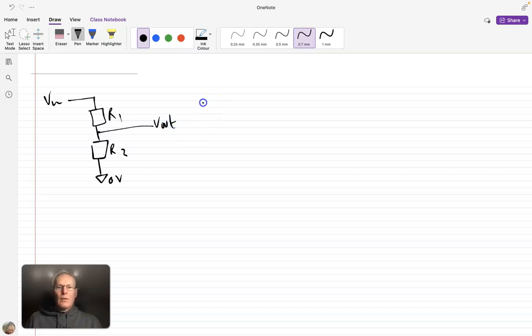then we can state that the Vout is equal to a ratio of these resistors. So this is our resistor of interest, R2. So we have R2 on the top, and we have R1 plus R2 on the bottom, VIN. So as you can see from this equation, as we change the ratios of R2 and R1,